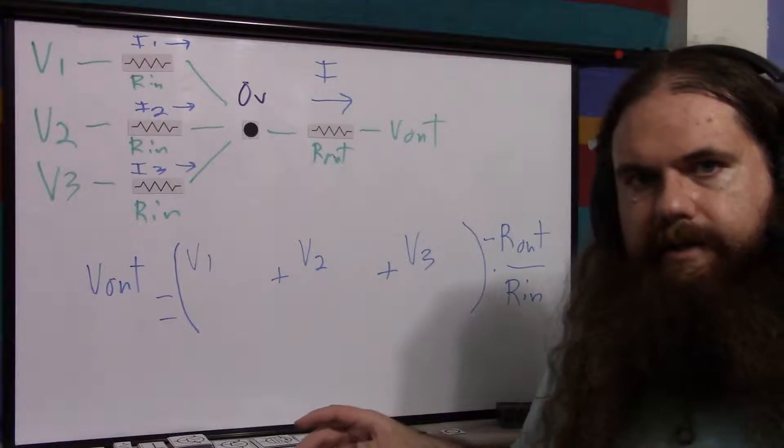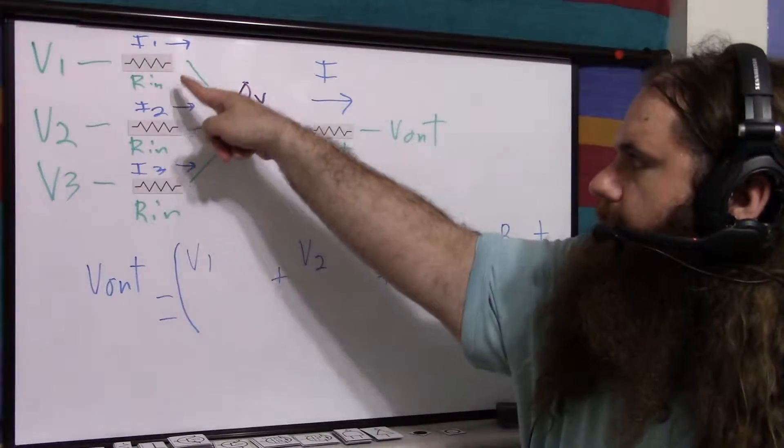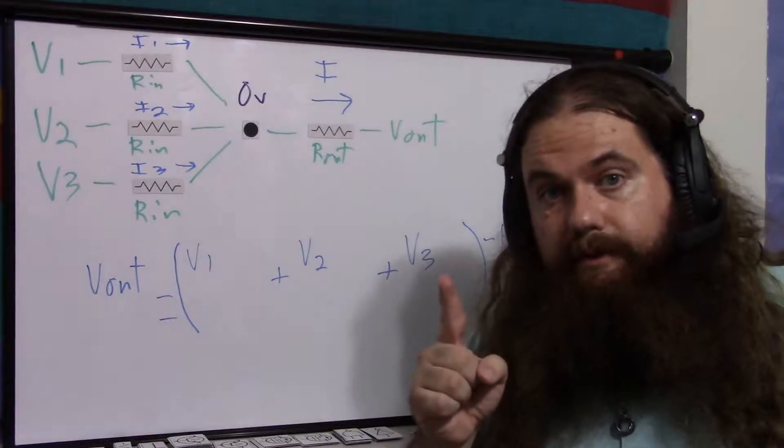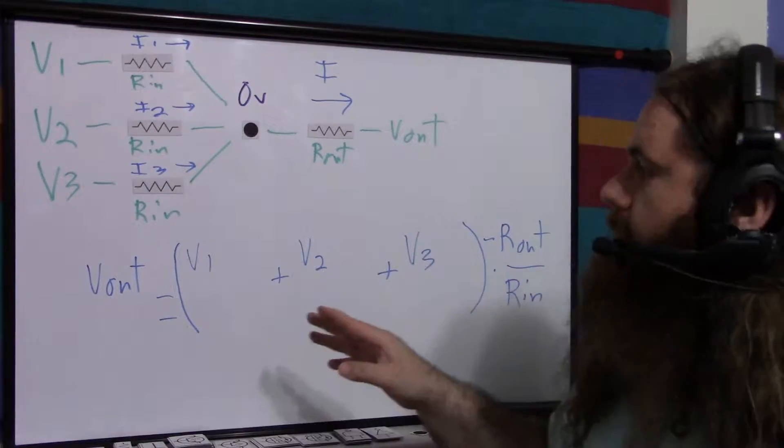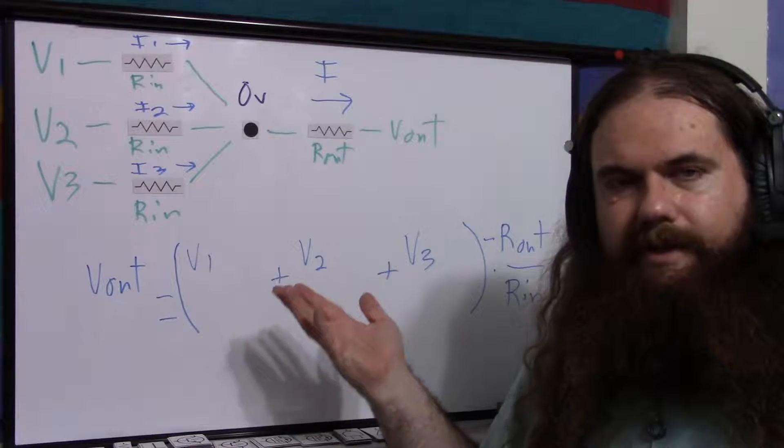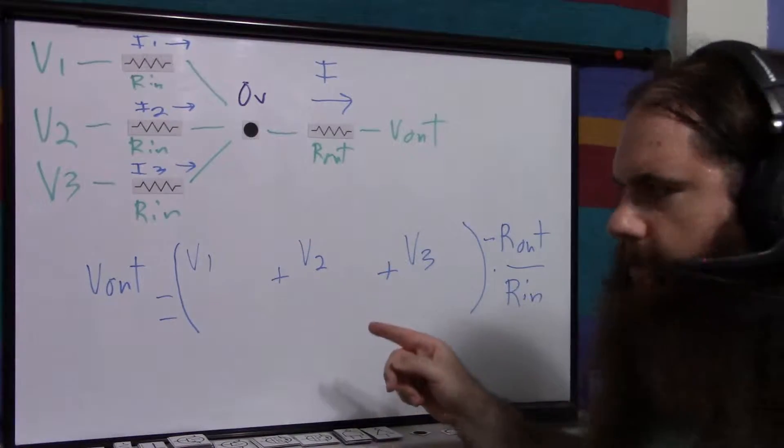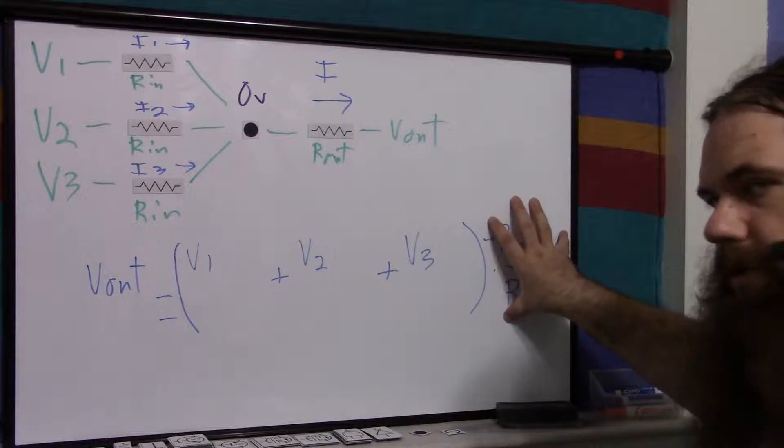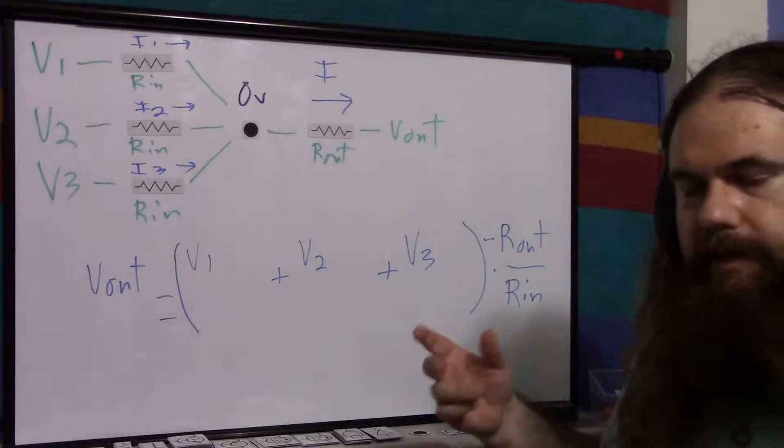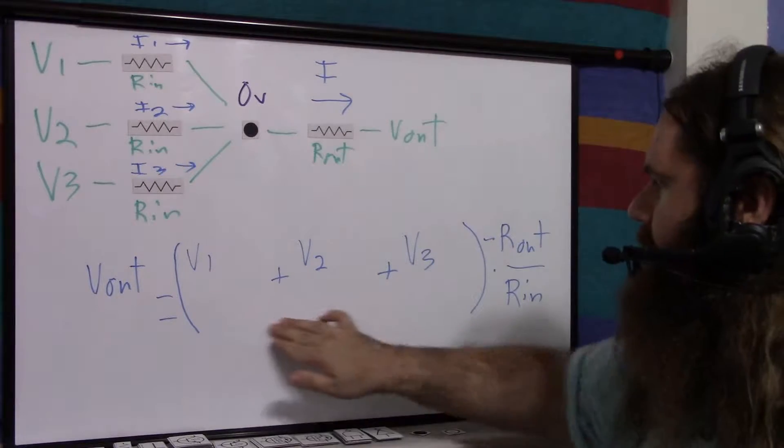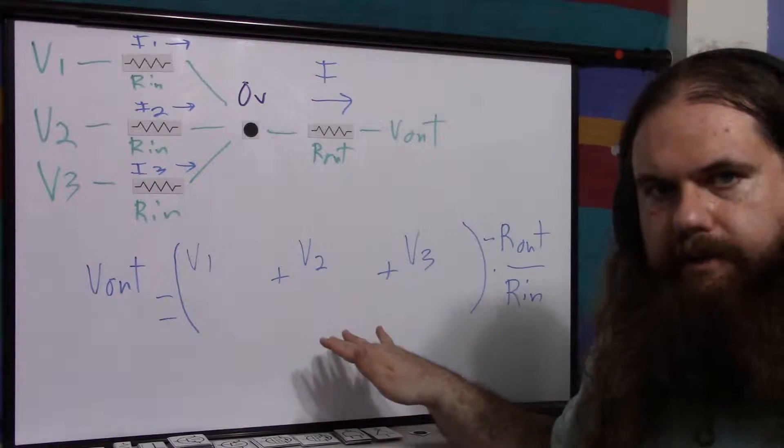So negative R out over R in is essentially your gain. All of these resistors are the same value. They don't have to be. That's the next video. But here, we're simply summing. So the math, actually the math was easier technically, but it took a little bit of extra step. But you essentially just pick your gain, just like before. You pick your R out and R in to get your gain. The negative means it's inverting. And then your gain is applied to the sum of the voltages.